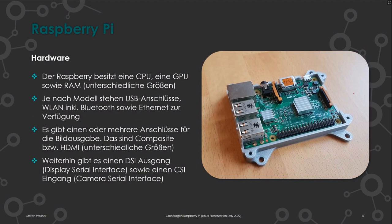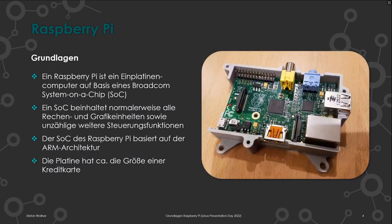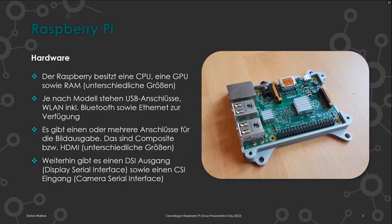Der Raspberry Pi besitzt eine CPU und GPU wie jeder Rechner, unterschiedliche RAM-Größen je nach Modell sowie verschiedene Netzwerkanbindungen – WLAN oder Ethernet. Es gibt mehrere Anschlüsse zur Bildausgabe: Das älteste Format ist der Composite-Anschluss – viele kennen noch die gelbe Cinch-Buchse. Heute ist dieser Composite in den Klinkenausgang integriert. Jeder Raspberry Pi hat zudem HDMI als Bildschirmausgang, allerdings in unterschiedlichen Größen je nach Modell.